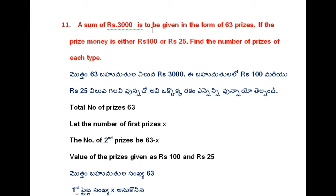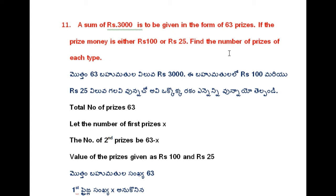11th problem: A sum of 3000 rupees is to be given in the form of 63 prizes. Totally 3000 rupees is expended on 63 prizes. If the prize money is either 100 rupees or 25 rupees, find the number of prizes of each type. We need to find how many first prizes and second prizes were given.